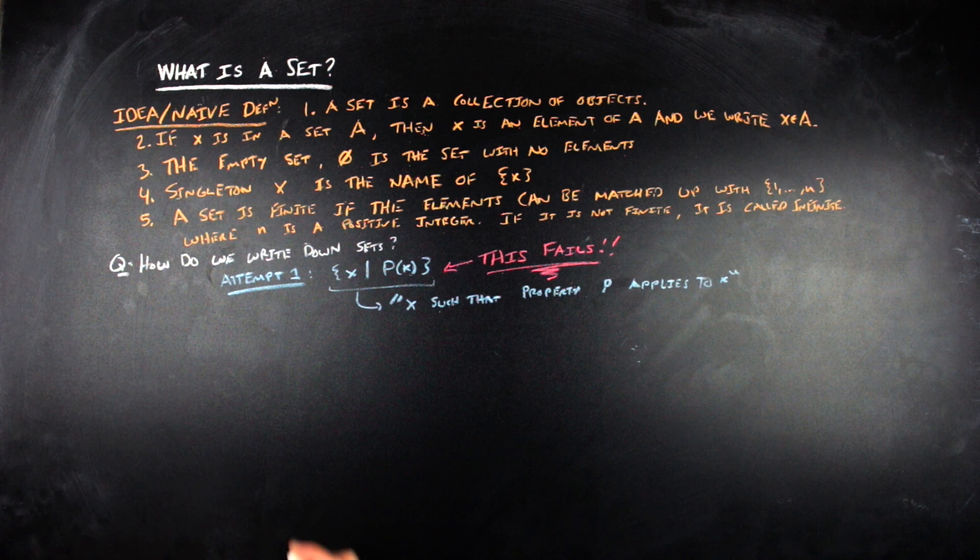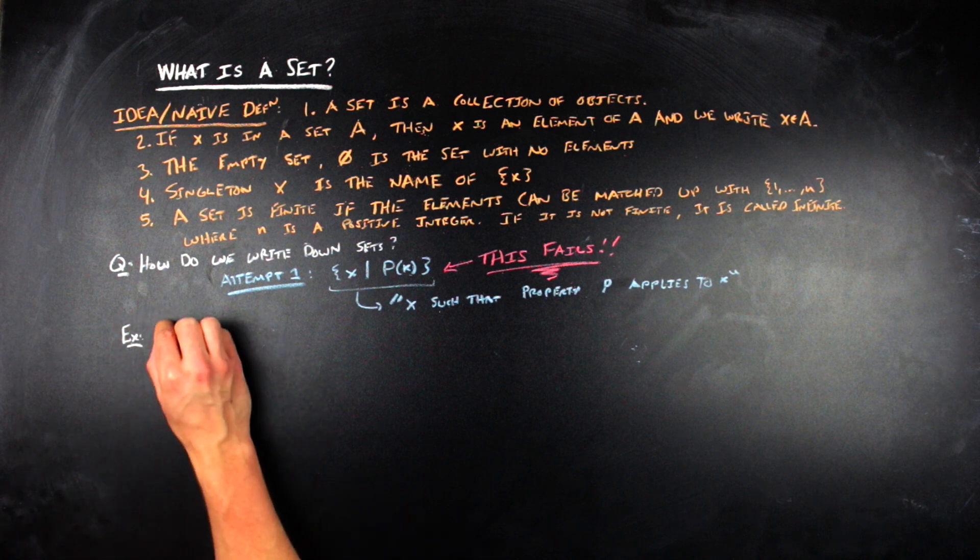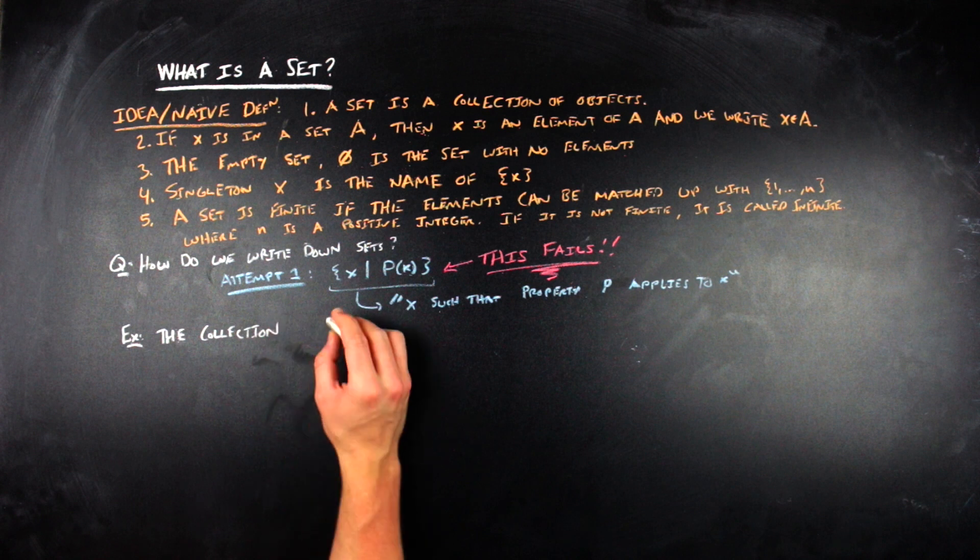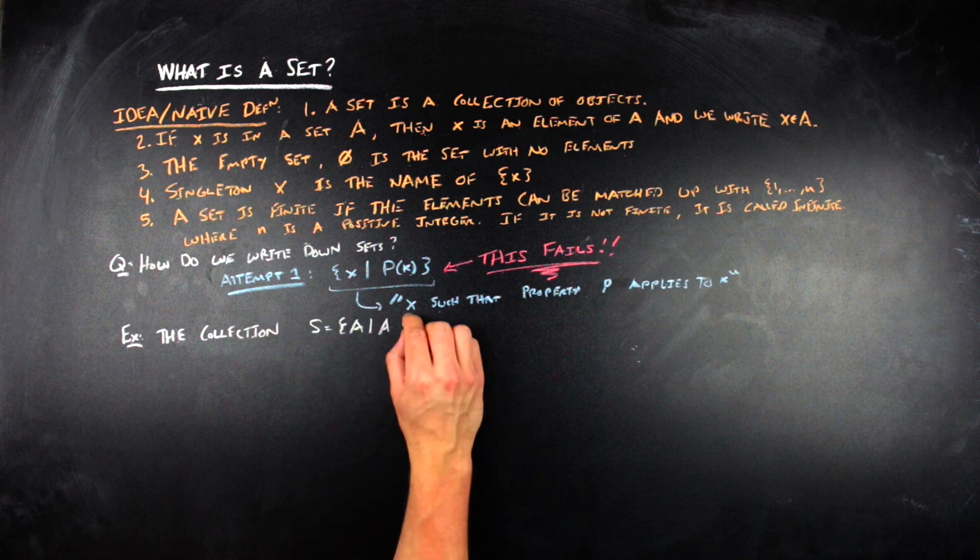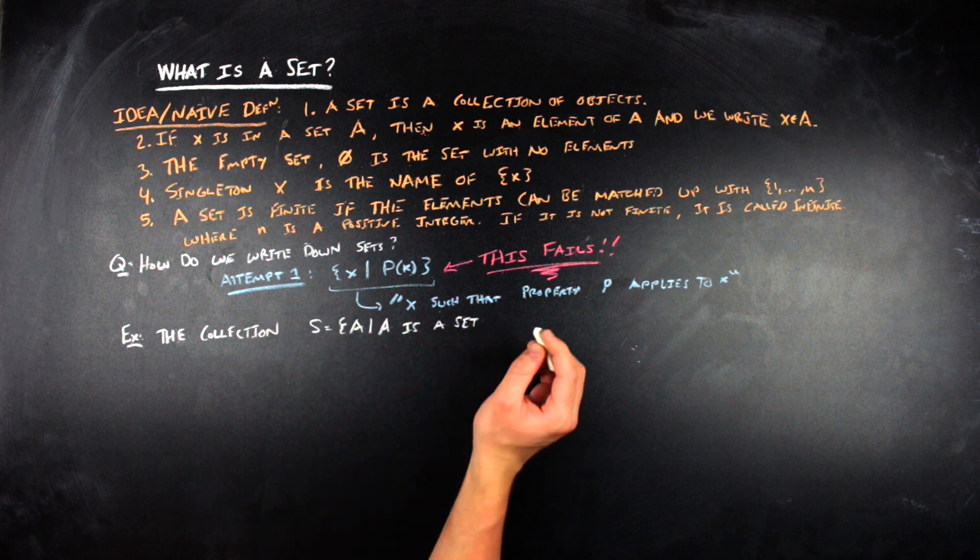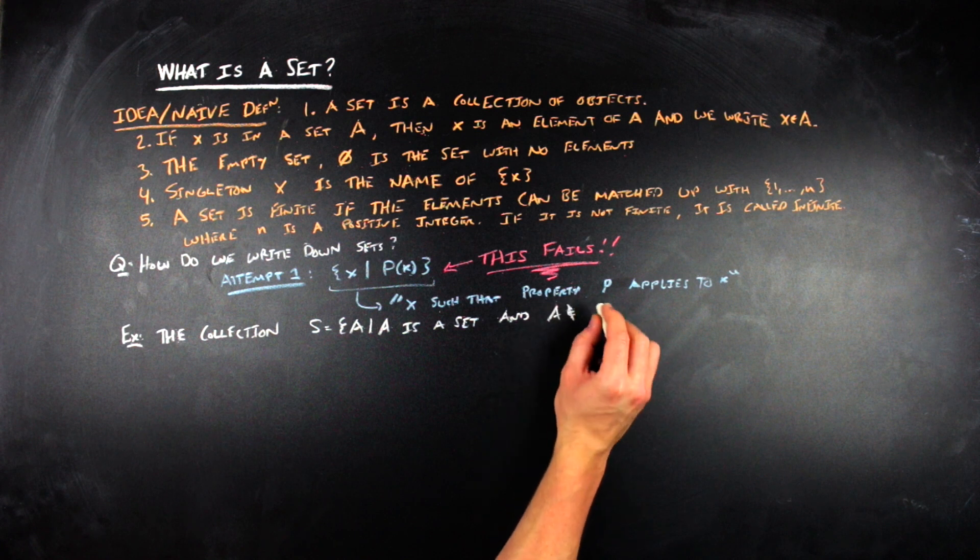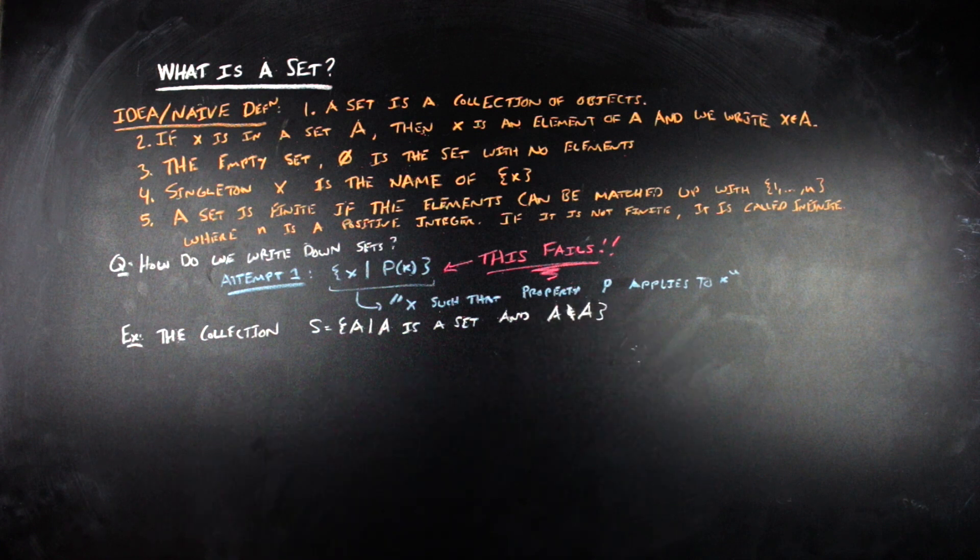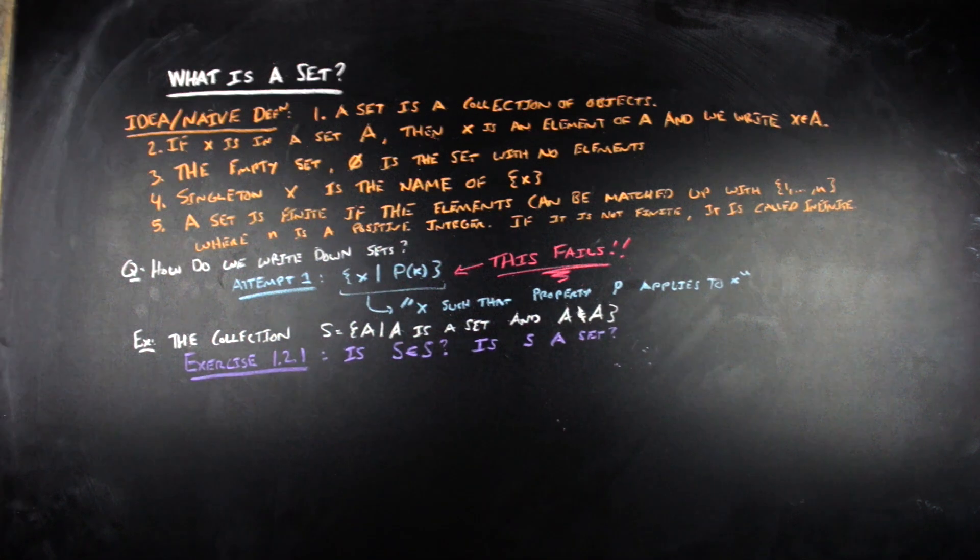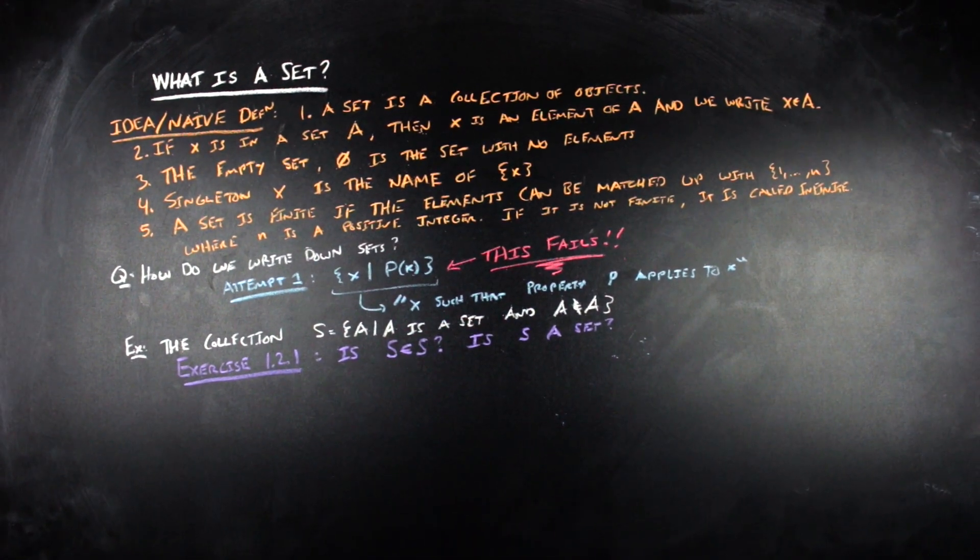And so, the way to see this is to think about the problem with the following collection. So, let s be the set of sets such that those sets are not elements of themselves. And so, the first exercise for this video is, is s in itself or not? If you were to go down this road further, it gets you to, like, definitions of what a proper class is and all of that stuff, but we're not doing that in these videos.